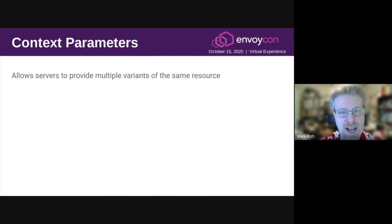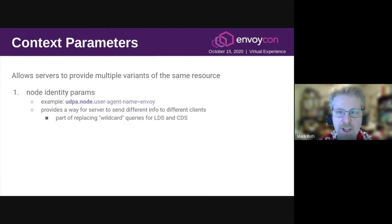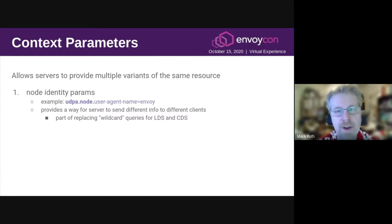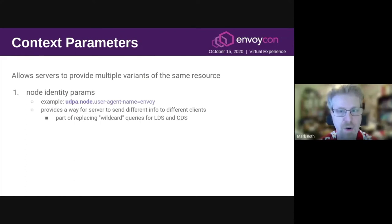Let's talk more about context parameters. The purpose is to allow servers to provide multiple variants of the same resource — this is the key to making all kinds of information a first-class part of the cache key for resources. Context params come from multiple places. First, there are node identity parameters, which can be populated from the node message in the bootstrap file. These are prefixed with the string udpa.node. This is a key part of replacing the wildcard queries in LDS and CDS that Harvey mentioned earlier. The idea is to use these context params to encode things that used to live in the node message only, so instead of the server looking at the client's node identity to decide which resources to return, the client can explicitly ask for what it wants in a flexible way.